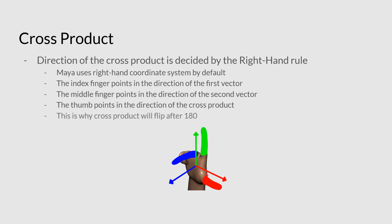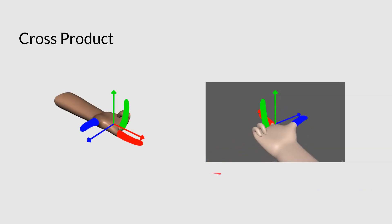Now, this is why the cross product will flip after 180 degrees. It's because of this, because if we're rotating around, to be able to keep that relationship between them, the cross product will have to point in the other direction. So I just want to make sure that, just to clarify,